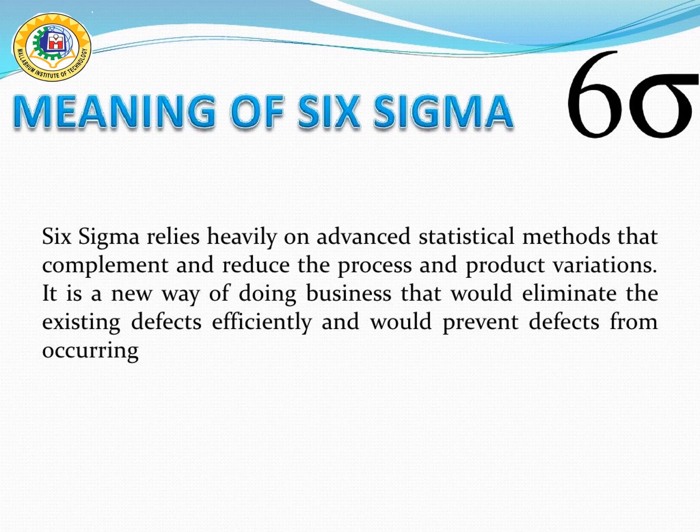So basically, Six Sigma quality is a term generally used to indicate a process is well controlled — that is, within process limits of plus or minus three sigma from the central line in a control chart, and within requirements or tolerance limits of plus or minus six sigma from the center line.